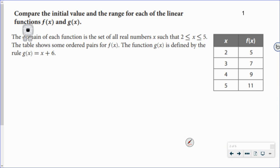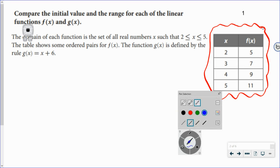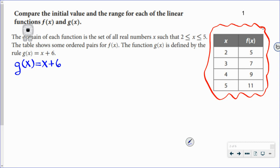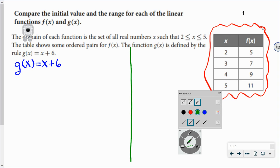This is the first one. We want to compare the initial value and the range for each of these two functions. The first function is f(x), given to us in a table. The other function is g(x), given to us in an expression or equation: g(x) equals x plus 6.